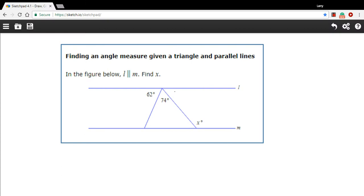In this problem, we've got a triangle sandwiched in between two lines, L and M, and L and M are parallel lines, and we need to find this external angle of the triangle.